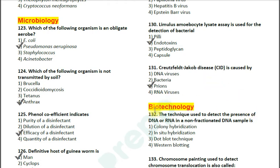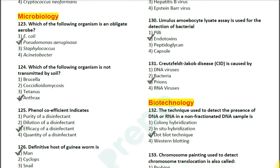Now the next questions are from the subject Biotechnology. Question number 132: The technique used to detect the presence of DNA or RNA in a non-fractionated DNA sample is — option 1: colony hybridization; option 2: in situ hybridization; option 3: dot blot technique; option 4: Western blotting. The correct answer is option 3 — the dot blot technique.